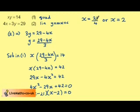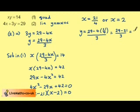We need to find the corresponding y values, substituting 21 over 4 into the expression for y. We get 29 take away 4 times 21 over 4, all divided by 3. The 4's will cancel here, so we end up with 29 take away 21 over 3, which is 8 over 3.